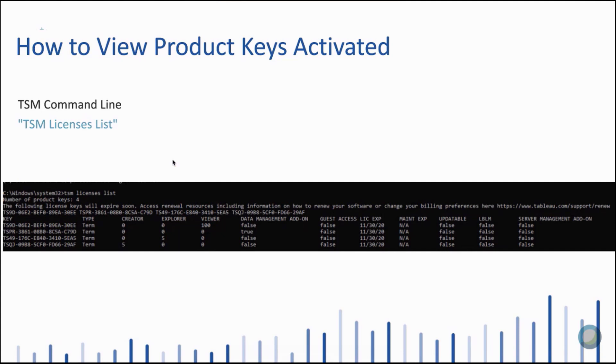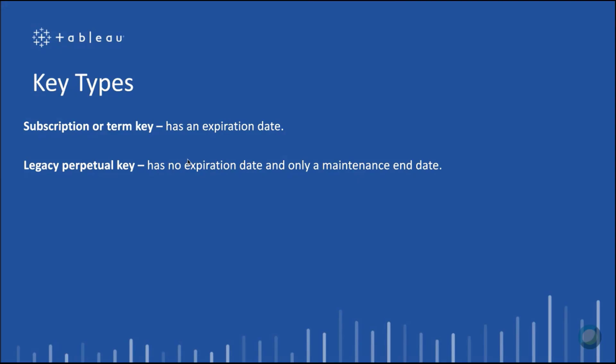There's also a command line option: TSM licenses list. It has the same information as the user interface — the different types of keys, any feature flags turned on, the expiration date, and the number of seats or cores available. Subscription or term keys are keys that have an expiration date and are our most common type. Once that expiration date hits, no refreshes can happen and the product will stop working. The legacy perpetual key is an older style key with no expiration date, only a maintenance end date — when that occurs, it's not possible to upgrade Tableau server, but the product will continue to run.